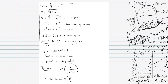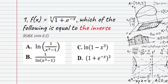So: f of x equals the third root of 1 plus e to the power of minus x. The inverse is ln in the bracket 1 over x cubed minus 1 — that is option A. Options b, c, and d are: 1 over ln(x cubed minus 1), ln(1 minus x cubed), and 1 plus e to the power of minus x whole cubed.